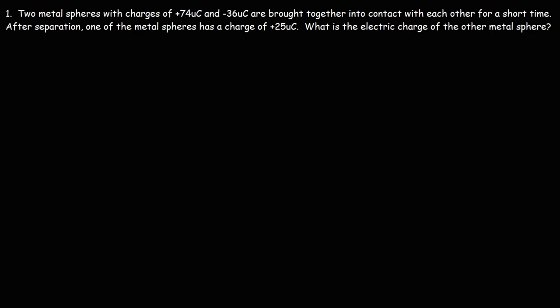Let's use this example problem to illustrate that. Two metal spheres with charges of +74 and -36 microcoulombs are brought together into contact with each other for a short time. After separation, one of the metal spheres has a charge of +25 microcoulombs. What is the electric charge of the other metal sphere?